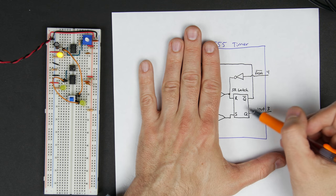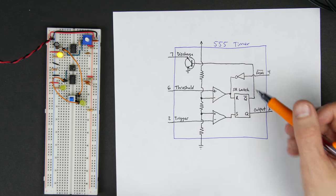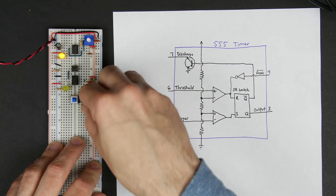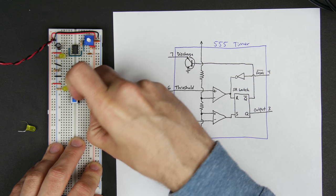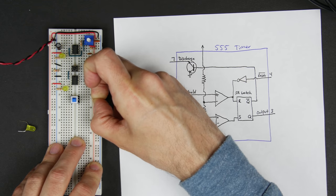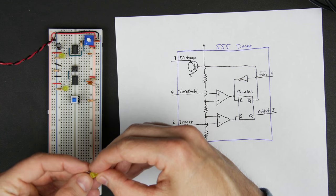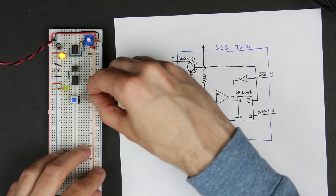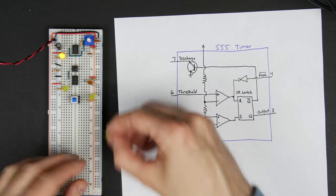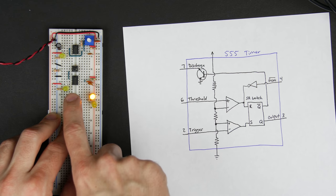The SR latch will actually act as a debouncer, and one of the reasons it'll do that is kind of a property of these switches. If we look at the switch, if I just hook up a couple LEDs so we can kind of examine how the switch normally works, what you'll see is that it switches between